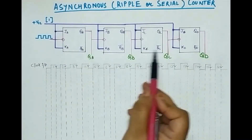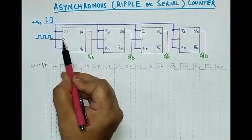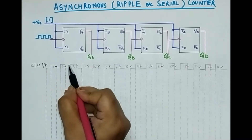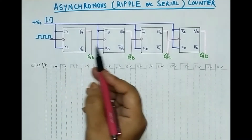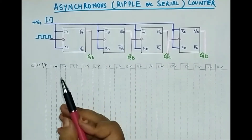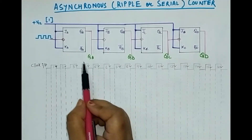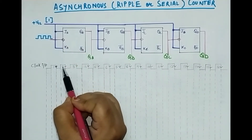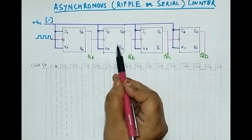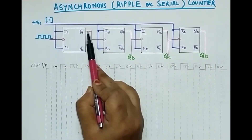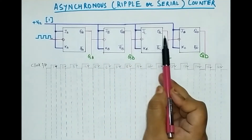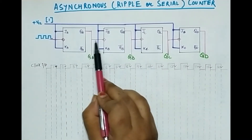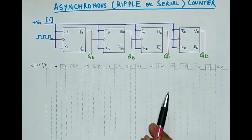In every flip-flop there is negative edge triggering. This bubble symbol indicates negative edge triggering — so whenever there will be a fall from 1 to 0, whenever the clock pulse will change from 1 to 0, only then the flip-flops will be triggered. The output will change in the first flip-flop when there is a transition in the clock pulse, and the output of the second flip-flop will change because of the change in the output of the first flip-flop. Since it is changing step by step, like a ripple, that is why it is called a ripple counter.